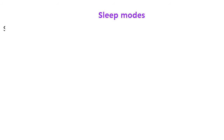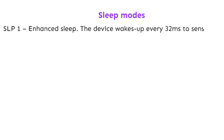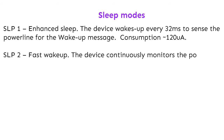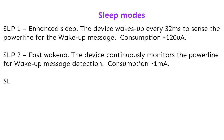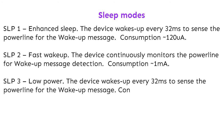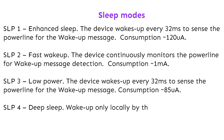Sleep modes: Sleep 1 (enhanced sleep) — the device wakes up every 32 milliseconds to sense the powerline for the wake-up message; approximately 120 microamps. Sleep 2 (fast wake-up) — the device continuously monitors the powerline for wake-up message detection; approximately 1 milliamp. Sleep 3 (low power) — wakes up every 32 milliseconds to sense the powerline; approximately 85 microamps. Sleep 4 (deep sleep) — wake up only locally by ECU command; approximately 65 microamps.